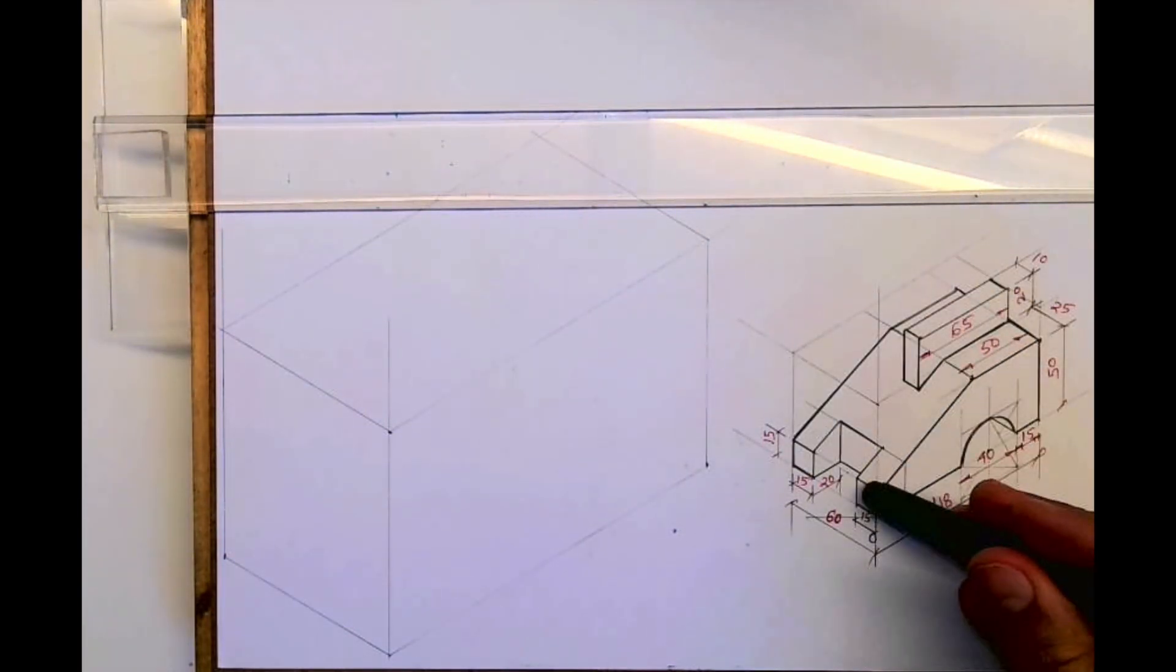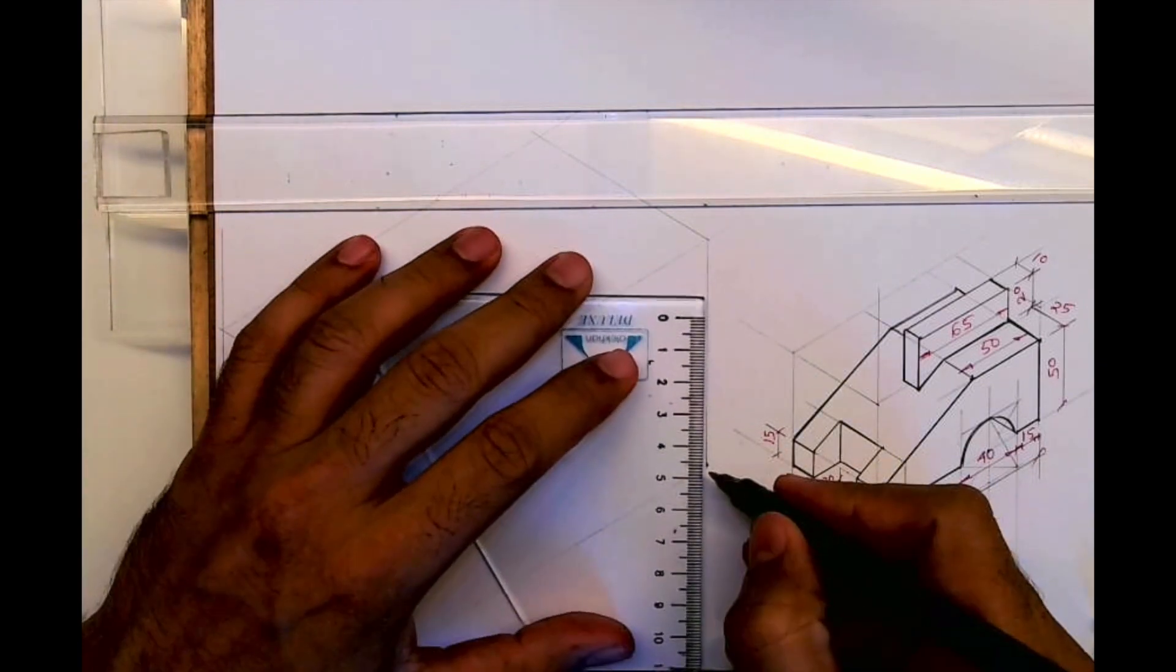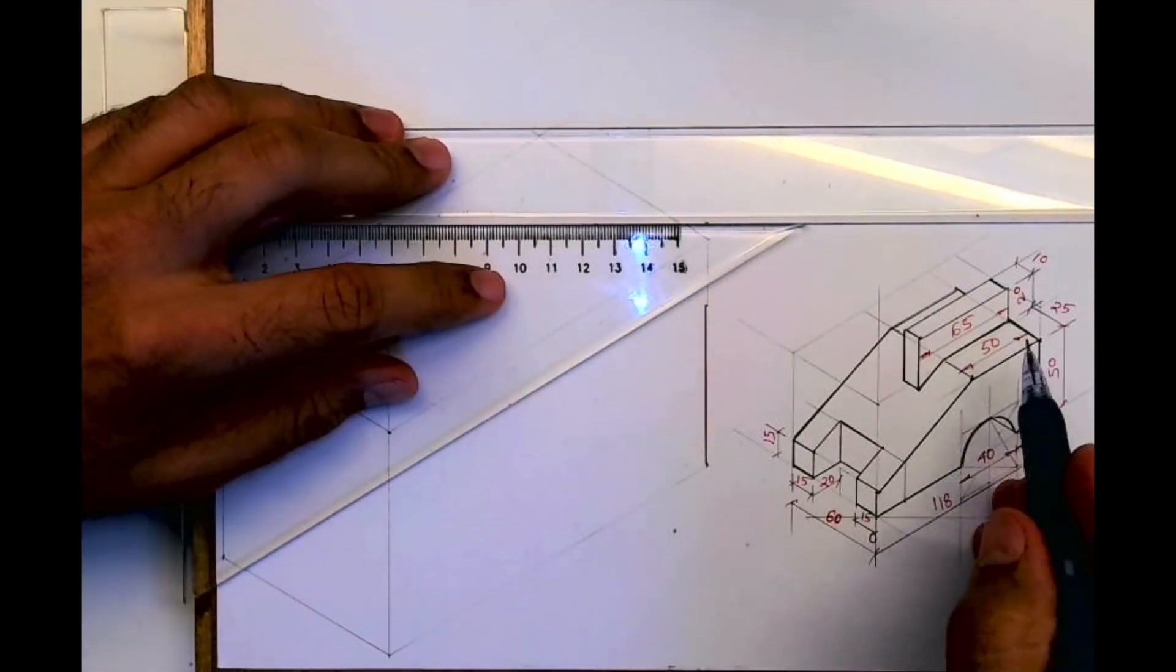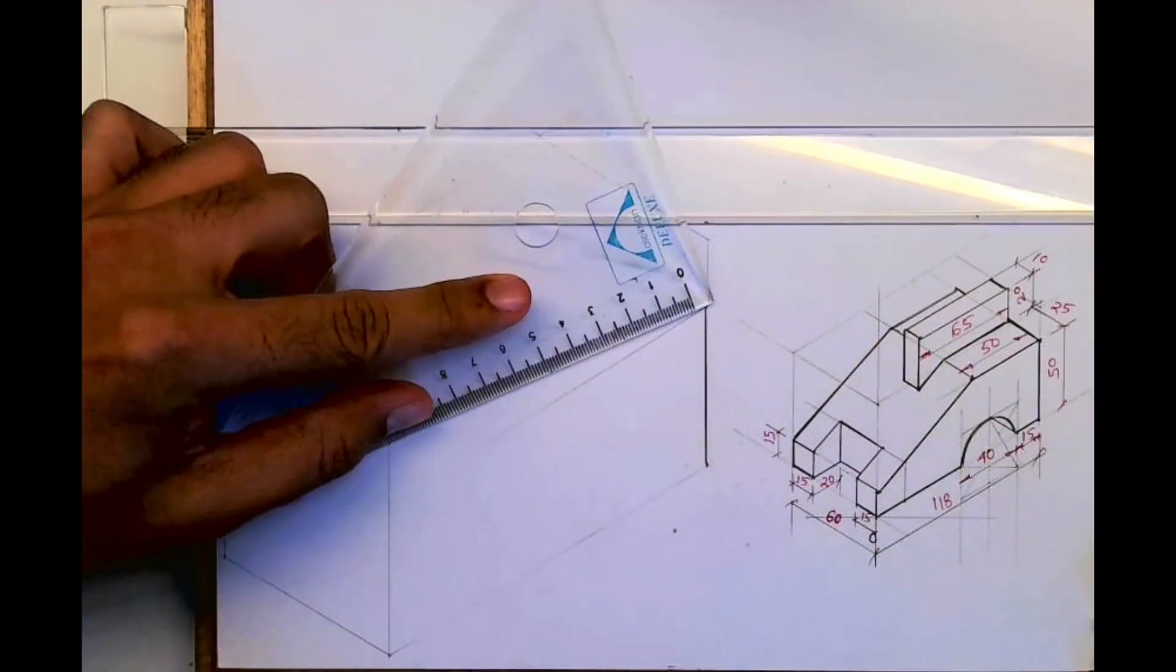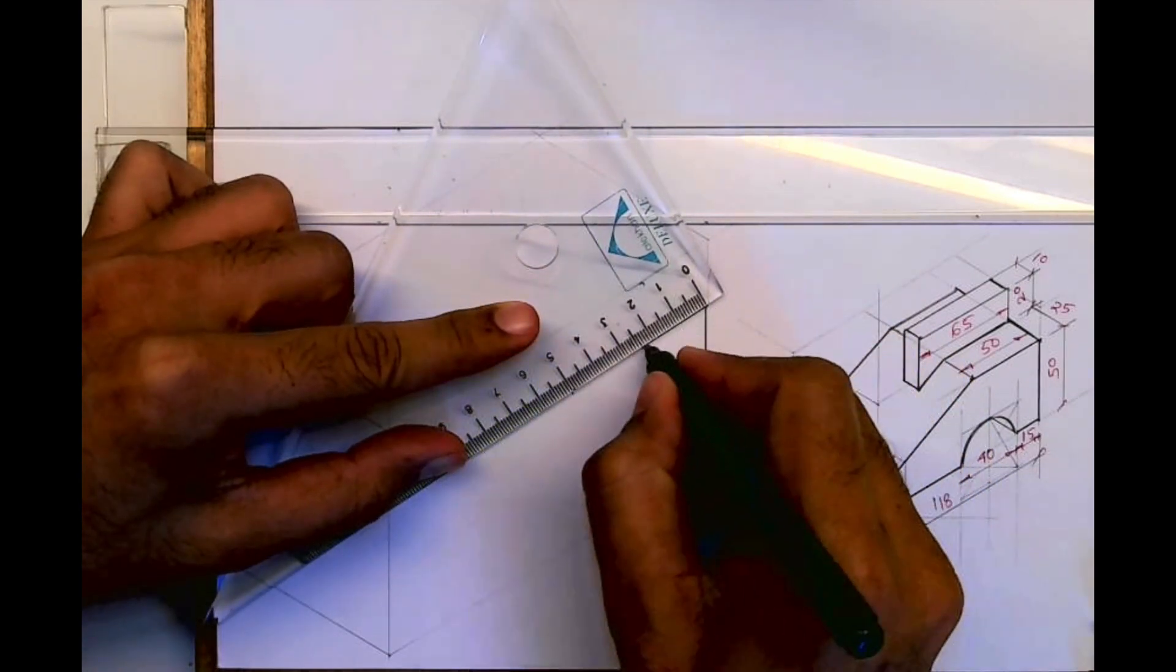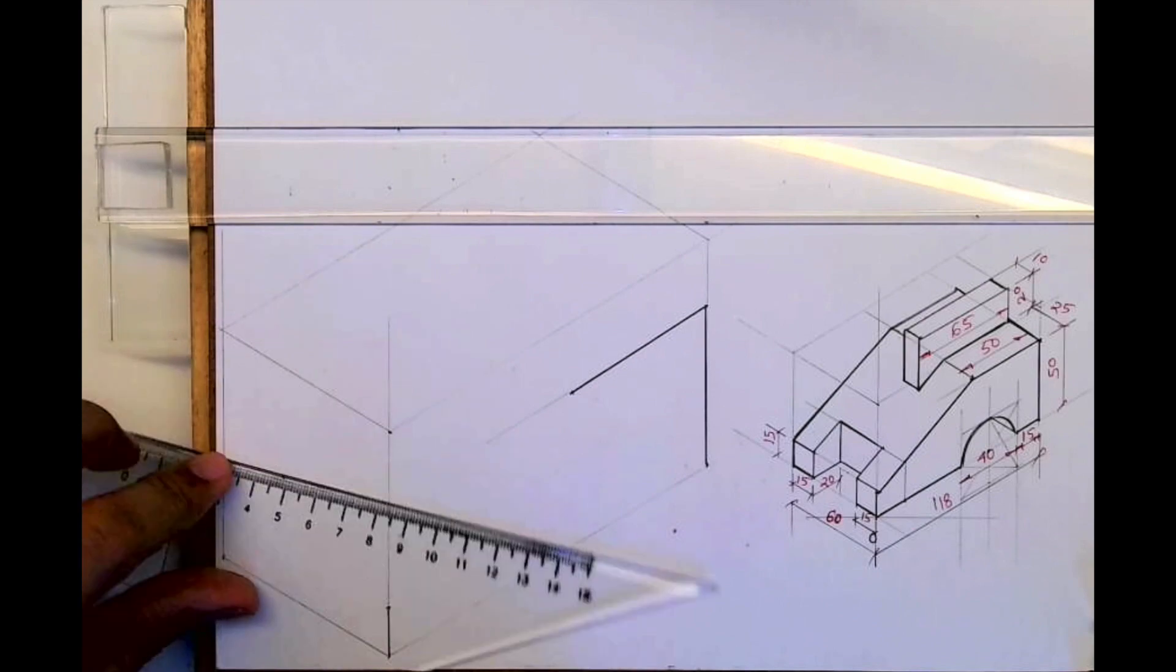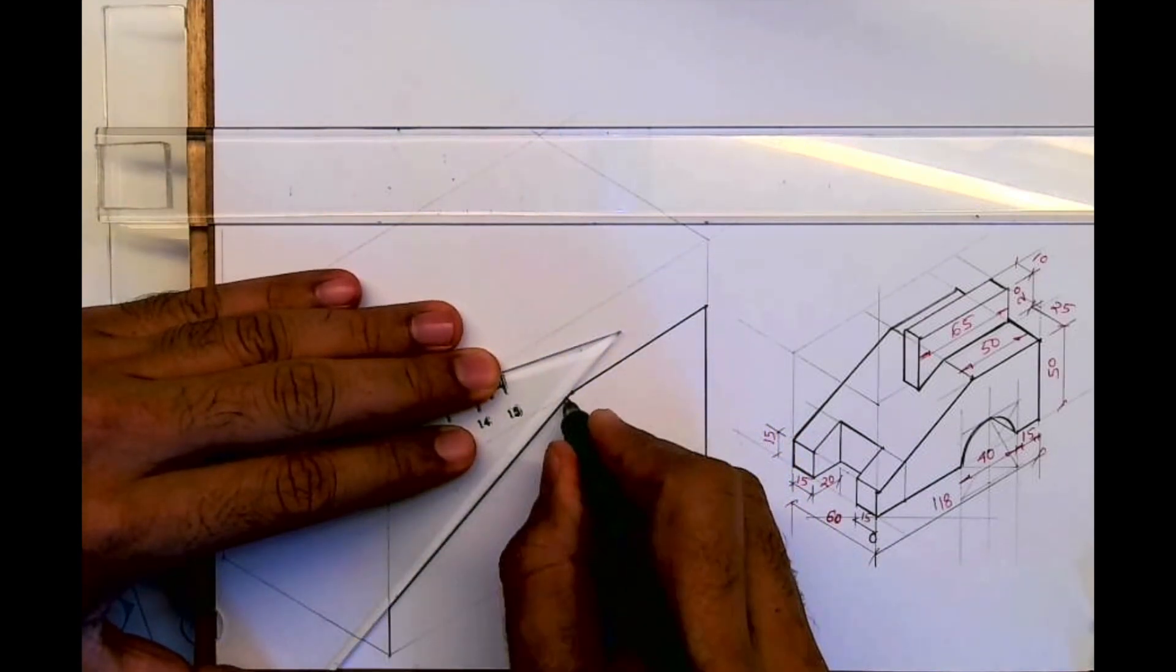First we will draw the layout and we'll start with this part. First 50, 50. We will take 50 from here. After that you take 50 from here. This height is 15. Now we join this.